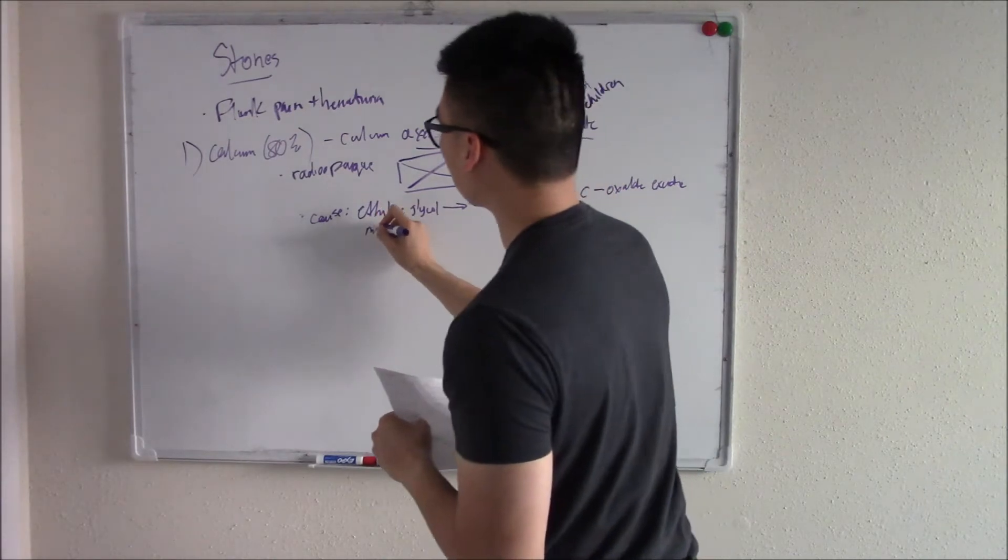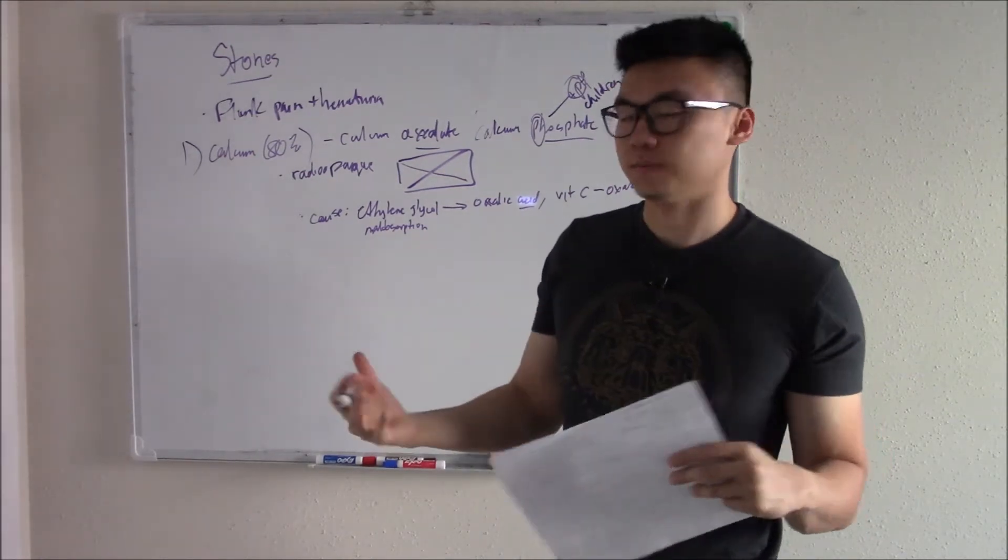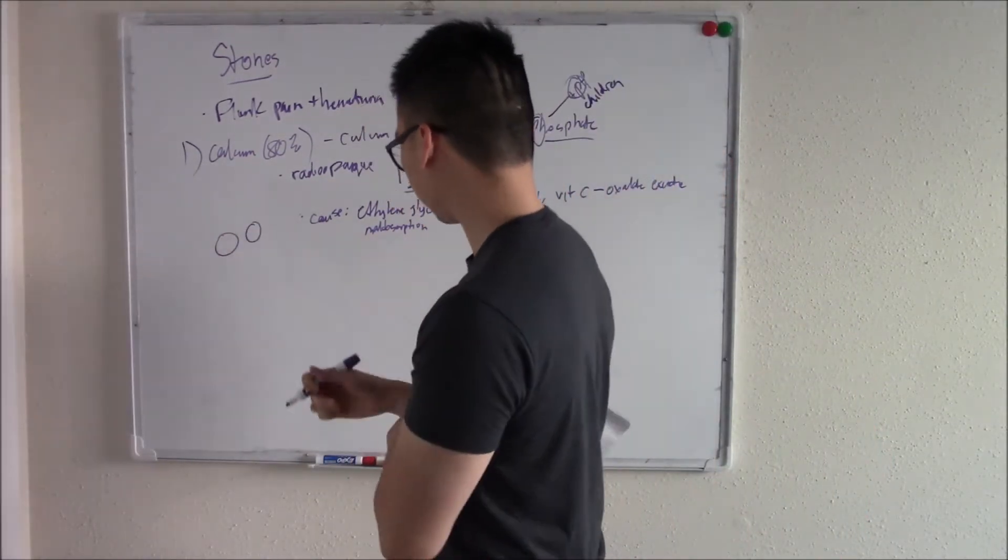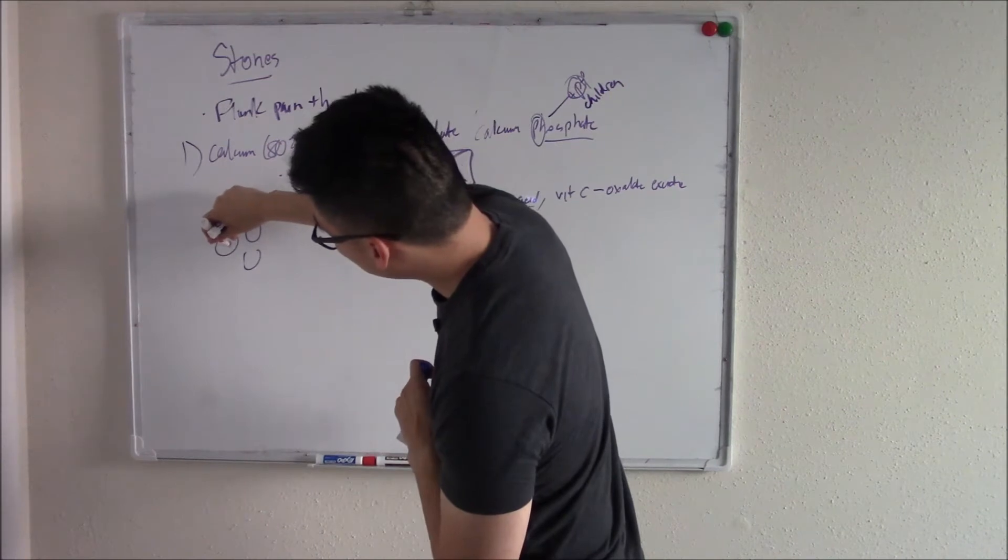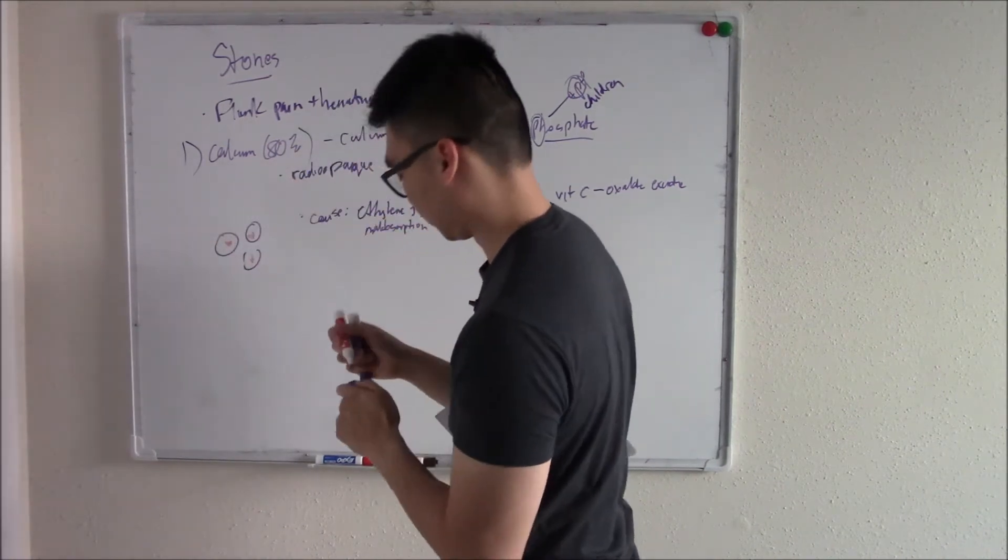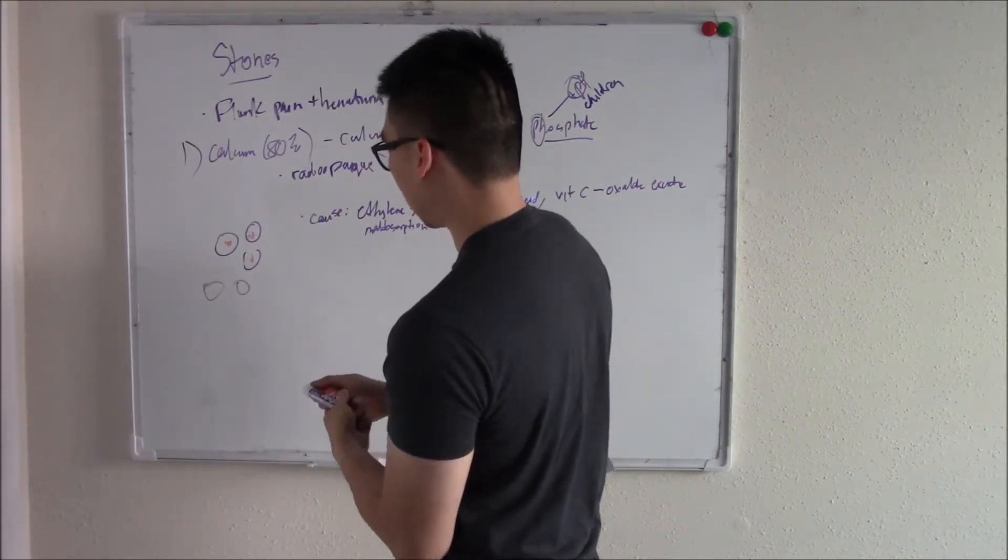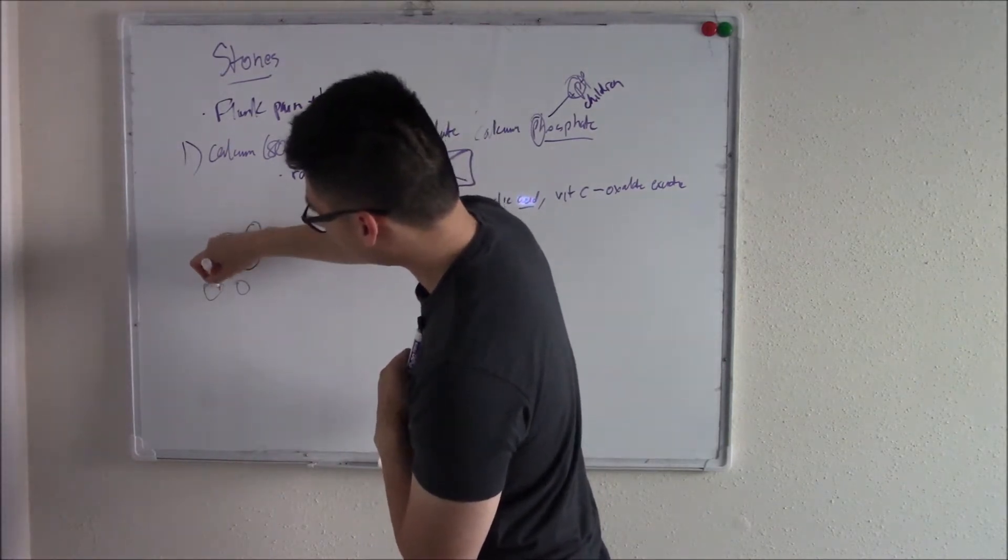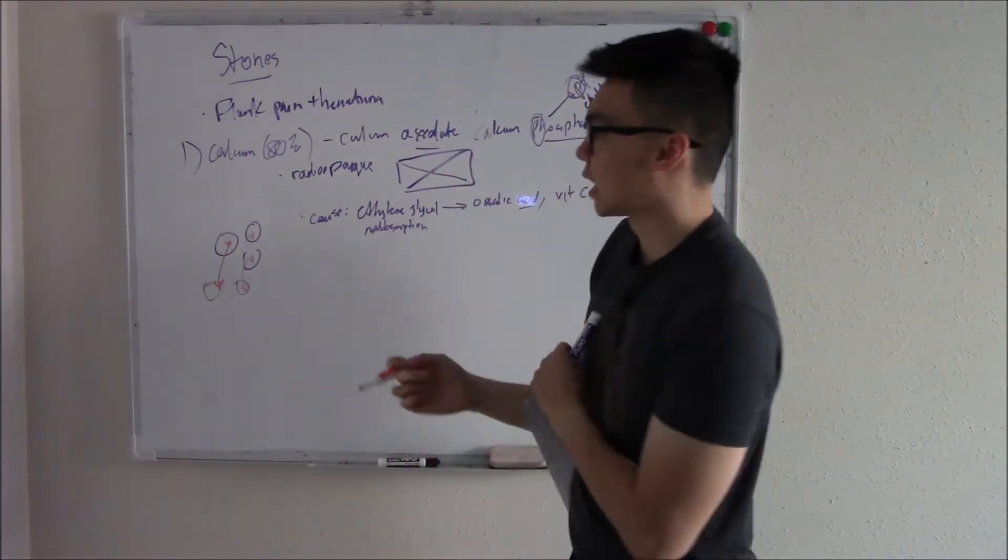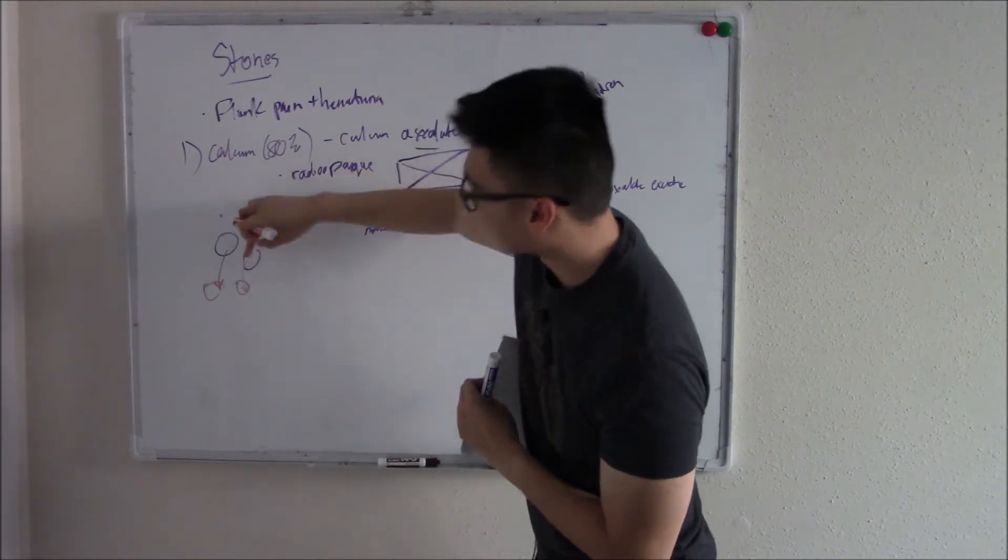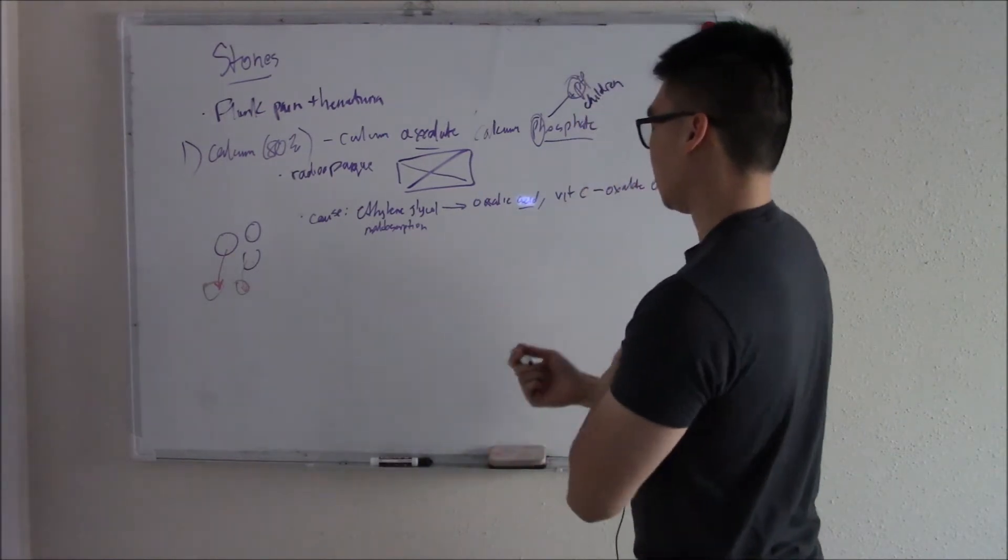Things like malabsorption, like in Crohn's or any sort of malabsorption. When you can't reabsorb things, things like fat flow around. Usually, calcium likes to bind oxalate. But if you have fat floating around, then calcium jumps ship and binds fat instead. So in malabsorption, you have a ton of fat and that causes calcium to bind to the fat instead. That leaves your oxalate free to roam and build up and precipitate. That's what causes the calcium oxalate stones.